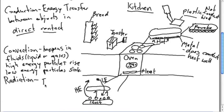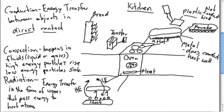This last kind of energy transfer is called radiation, and it is energy transfer in the form of waves that pass energy to heat atoms, or basically when a wave of radiation hits an atom, that atom gains energy, it starts to move faster.